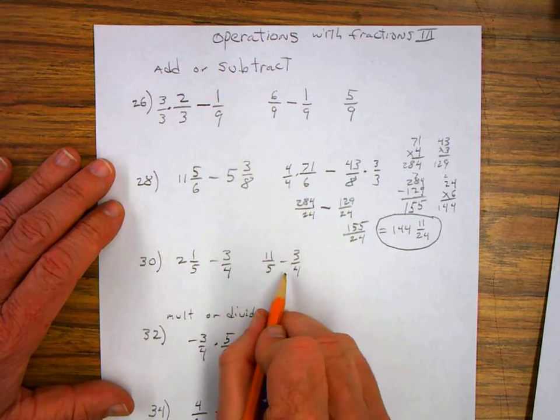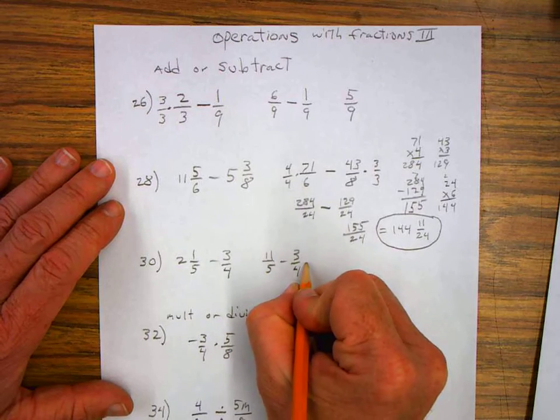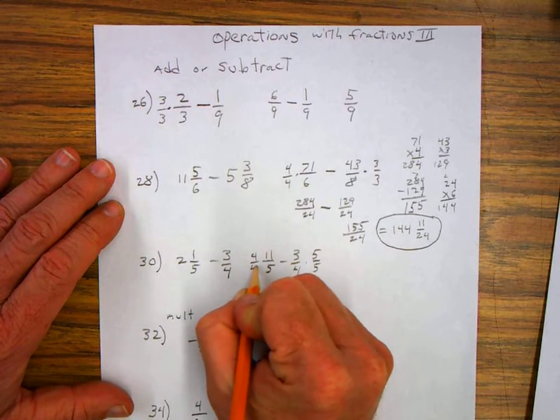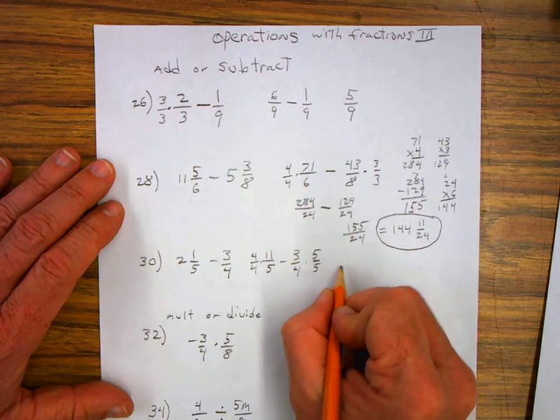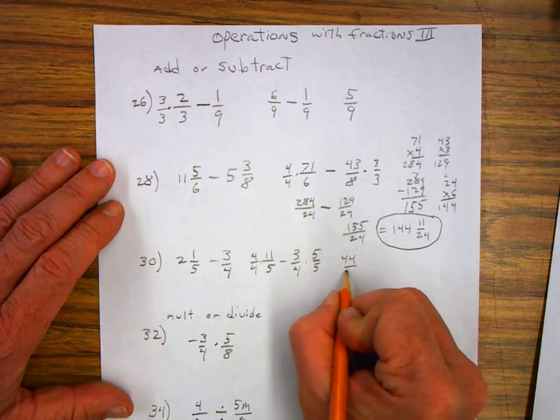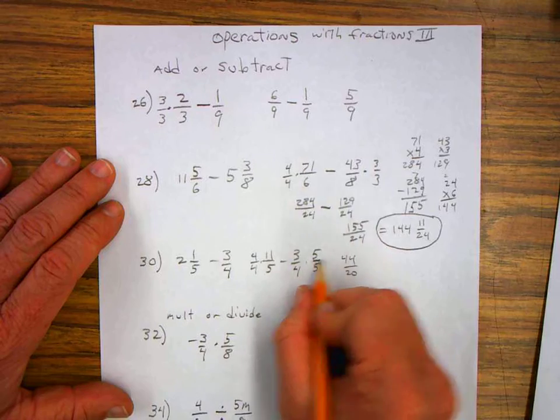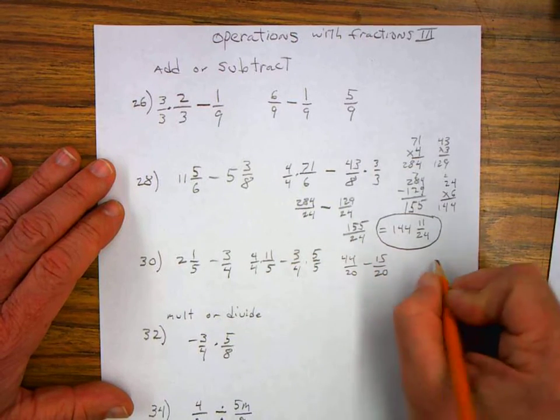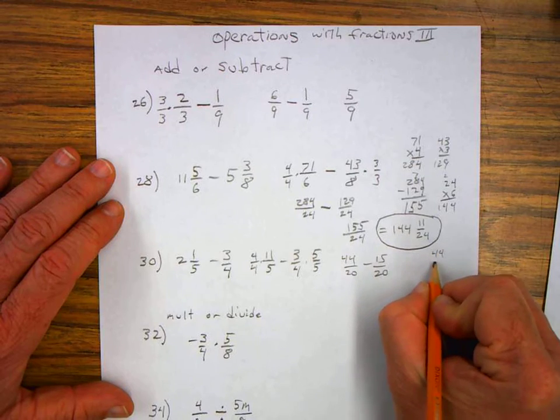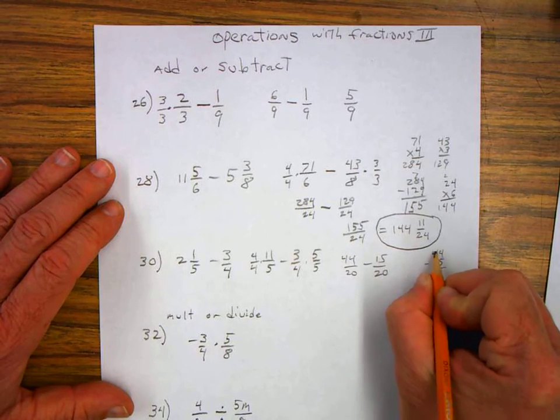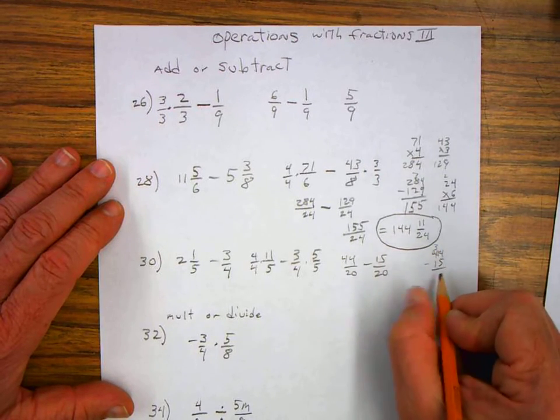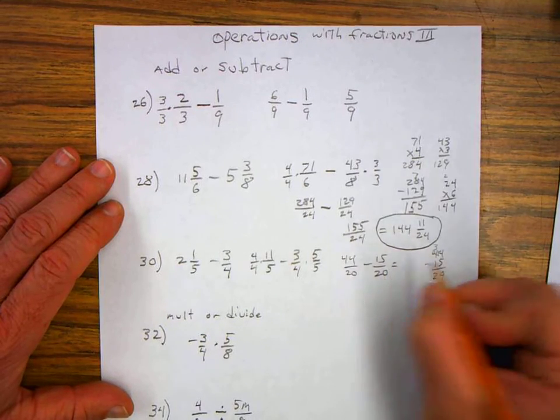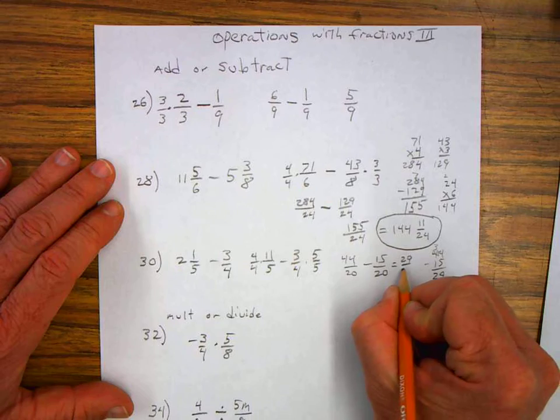The least common multiple of five and four is twenty. So I multiply five over five on this side and four over four on this side. Which gives me forty-four over twenty and three times five is fifteen over twenty. So when I subtract fifteen from forty-four, I borrow from the four and I get nine and two. So this is equal to twenty-nine all over twenty.